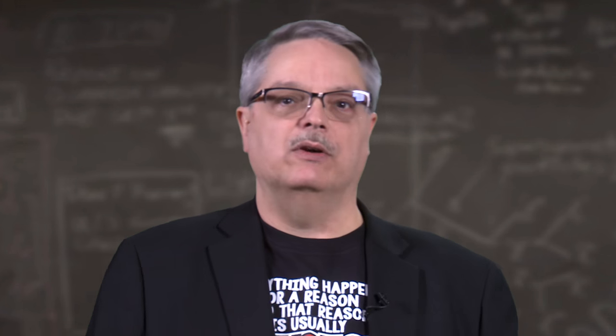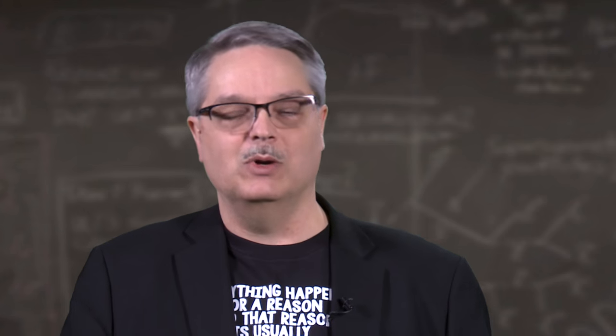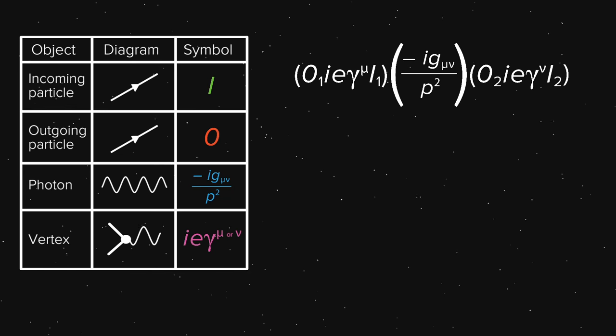So now we're ready to stitch things together. We can draw the simple Feynman diagrams and immediately write down a corresponding equation. Check it out. See how each piece fits in. I've color coded the symbols and the figures so you can see how they come together.